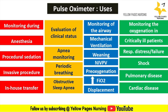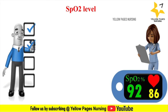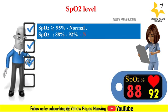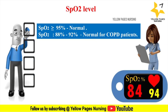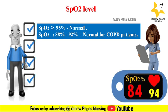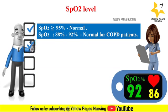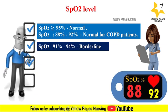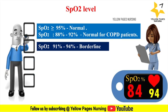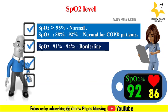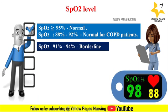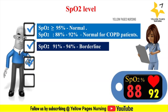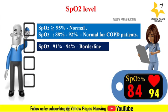Now let's discuss the ranges of SpO2 and what they indicate. An SpO2 level of 95% or above indicates normal range. SpO2 between 88% and 92% is considered normal for COPD patients, as this oxygen level is safe for someone with moderate to severe COPD. A saturation level below 88% becomes dangerous. SpO2 between 88% and 92% does not require invasive intervention, but it must be correlated with patient condition and monitored continuously.